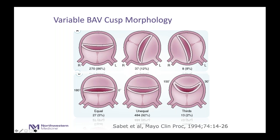Another important point is that the leaflets in a bicuspid valve are not equal in size. When patients have three leaflets, all three tend to be equal. When there is fusion of a leaflet, the fused leaflet tends to be larger, and this comes into play when discussing patients who may be candidates for certain therapies and for repair.